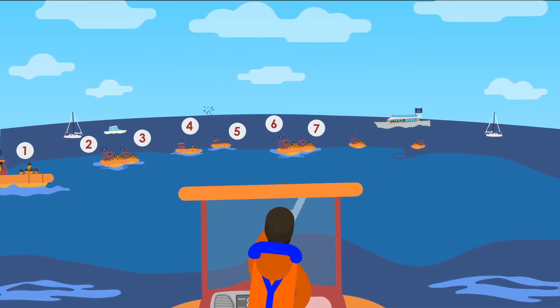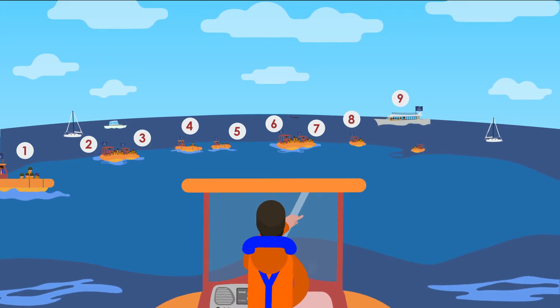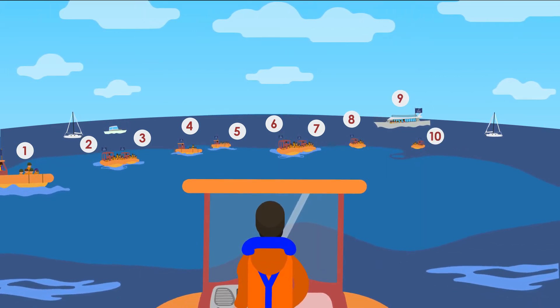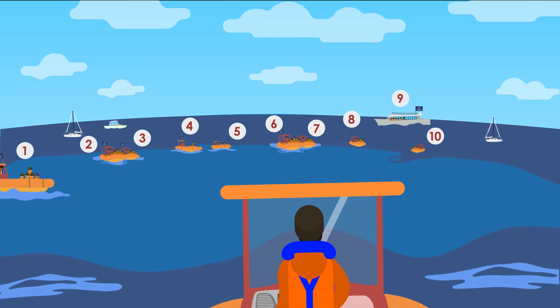Count the number of Class 1 boats present. If there are already 10, you cannot enter the area. Continue your cruise by looking for another observation site.